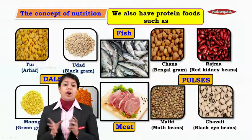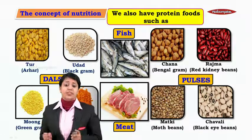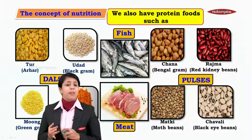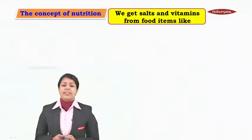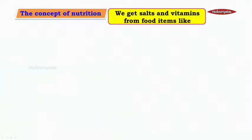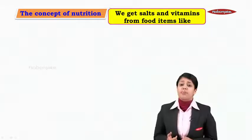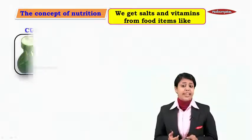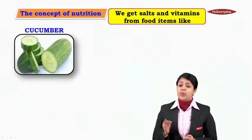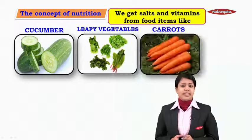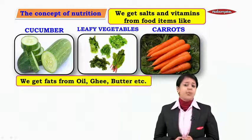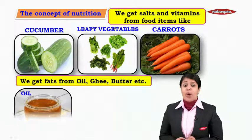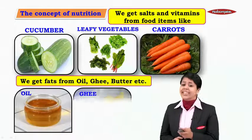Other protein-rich foods include fish and meat. We get salts and vitamins from food items like cucumber, leafy vegetables, and carrots. We get fats from oil, ghee, and butter.